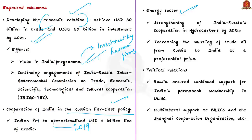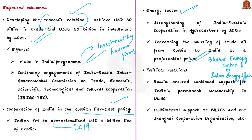There is already a roadmap for cooperation in hydrocarbons for 2019 to 2024 between India and Russia. A notable recent effort is the opening of the Bharat Energy Center in Moscow — also called the Indian Energy Office in Moscow — which represents five Indian oil and gas public sector companies: Oil India Limited, ONGC Limited, GAIL India Limited, Indian Oil Corporation Limited, and Engineers India Limited. This center was set up to enhance engagement with Russian stakeholders in the energy sector. The fourth expected outcome is in political relations — Russia has ensured its support for India's permanent membership in the United Nations Security Council.